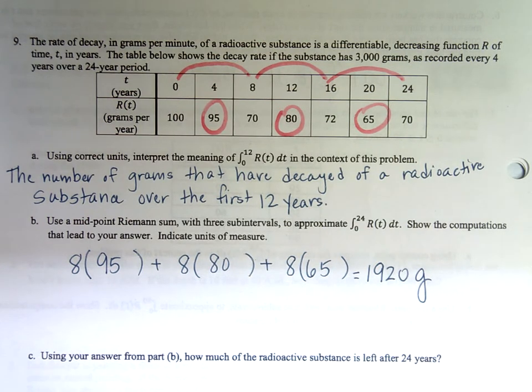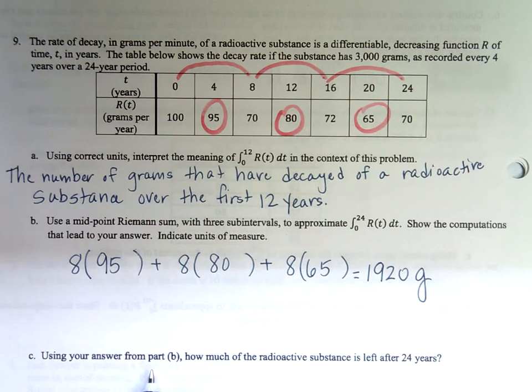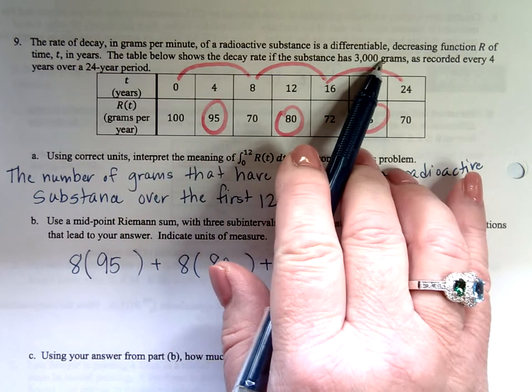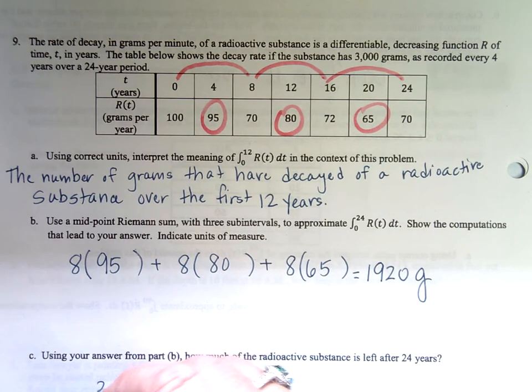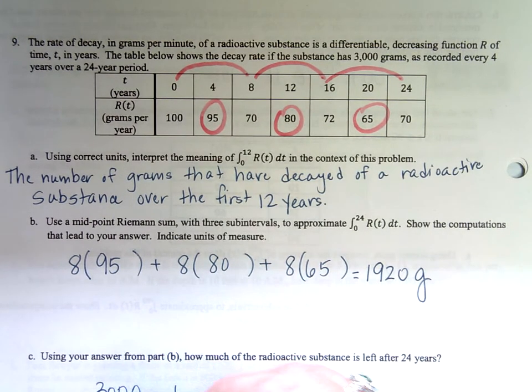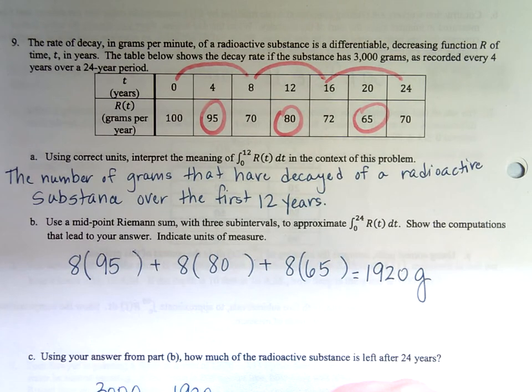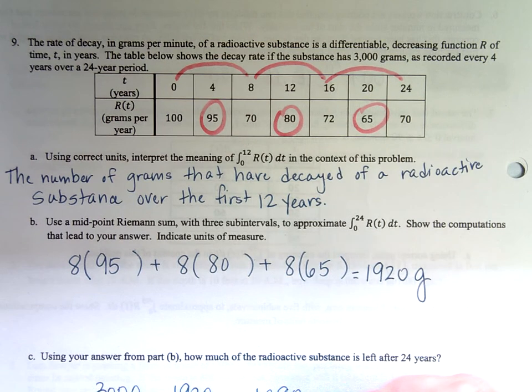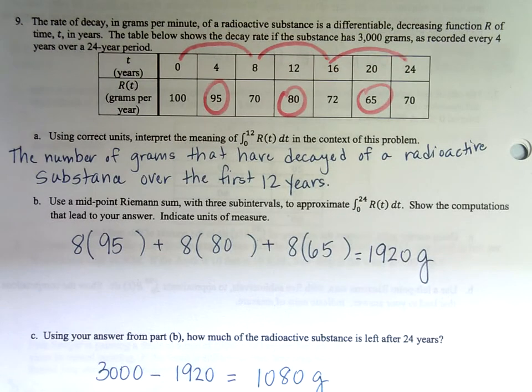Part C: using your answer from part B, how much of the radioactive substance is left after 24 years? How much did you start with? 3,000 grams. 3,000 grams is what I started with, and I'm taking away the 1,920 that decayed off of it, ending up with 1,080 grams. There's one with a midpoint Riemann sum. Good to refresh your memory on that.